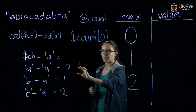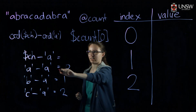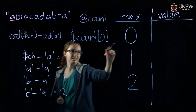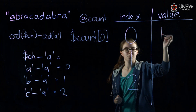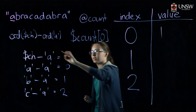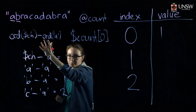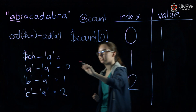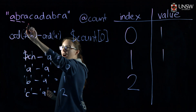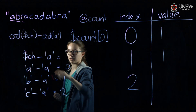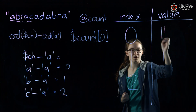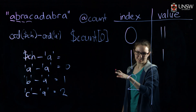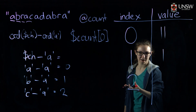So we'd go through and convert each character to an index, then increment the value at that index. We'd convert 'a' to index 0 and increment it, convert 'b' to index 1 and increment it, ignore 'r' because it doesn't map to index 0, 1, or 2, and so on. We can solve the problem this way, but it's kind of clunky. Is there a nicer way we can do this without all this annoying arithmetic?